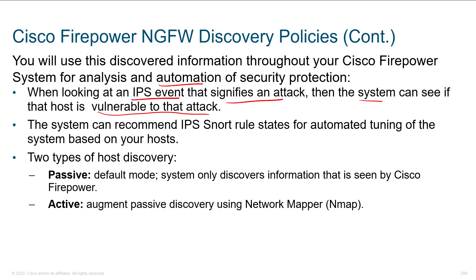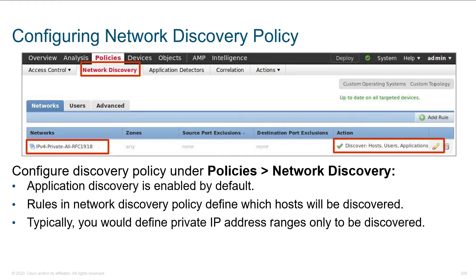Discovery policies allow us to gather more information so that when we use a Snort rule to analyze traffic and we see something that looks threatening, we can make a more intelligent decision about it. There are different types of host discovery. Passive is the default mode, so it only discovers information that's seen by Firepower. Active augments the passive discovery by leveraging Nmap. To turn it on, under policies you've got your access control, application detectors, and correlation. We're right here under network discovery.